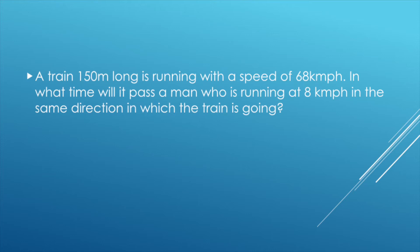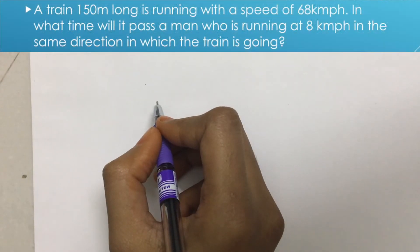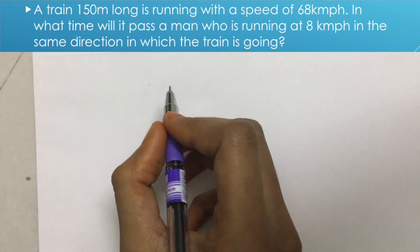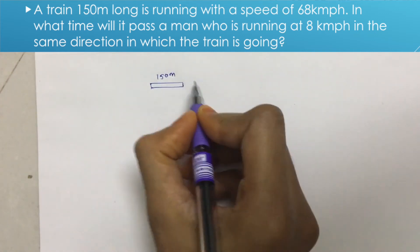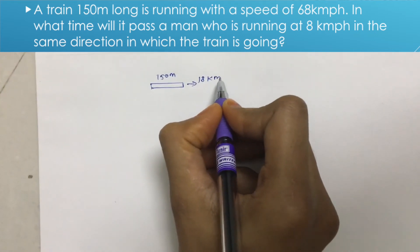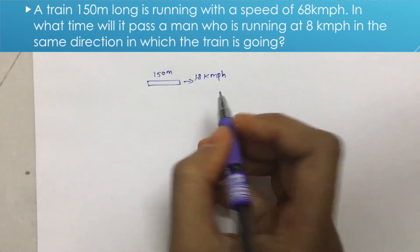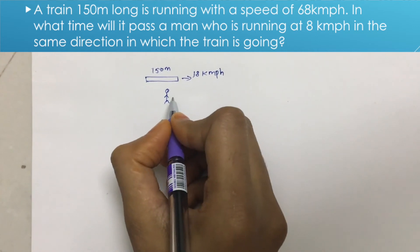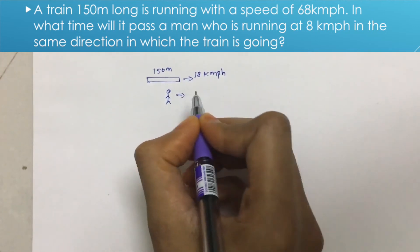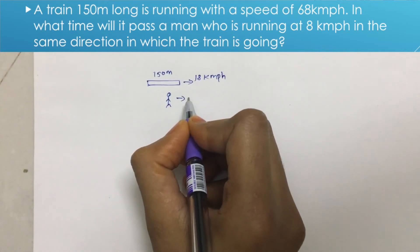Next question: a train 150 meters long is running with a speed of 68 km per hour. In what time will it pass a man who is running at 8 km per hour in the same direction in which the train is going? In this problem, the train is 150 meters long and its speed is 68 kmph, while the man is running at 8 kmph.